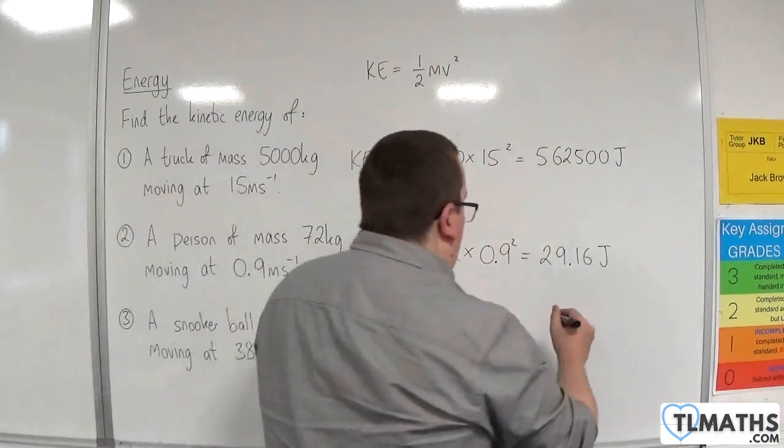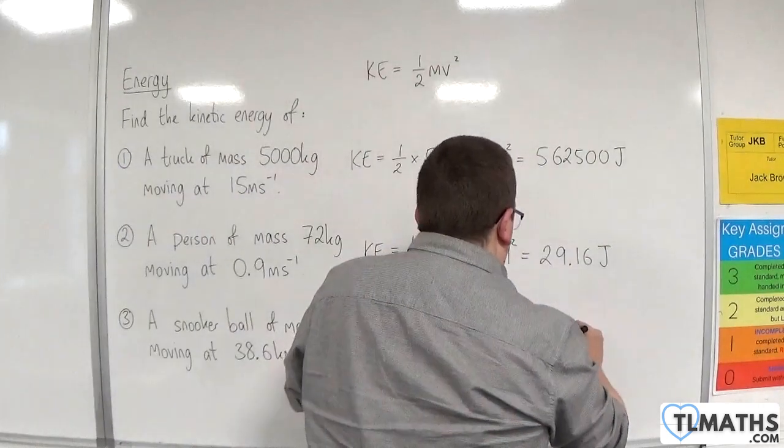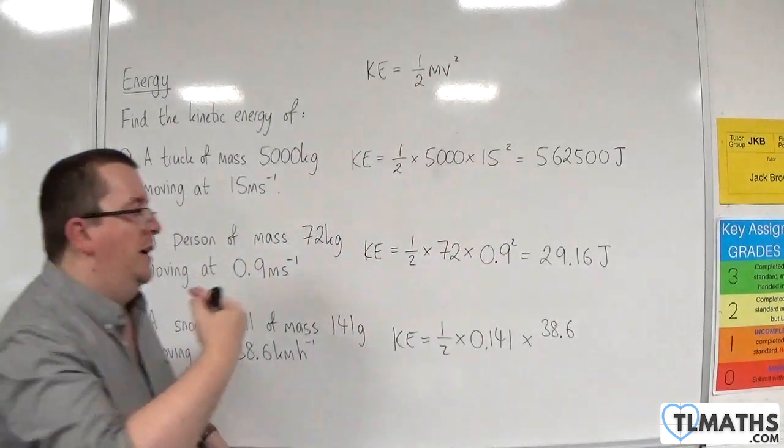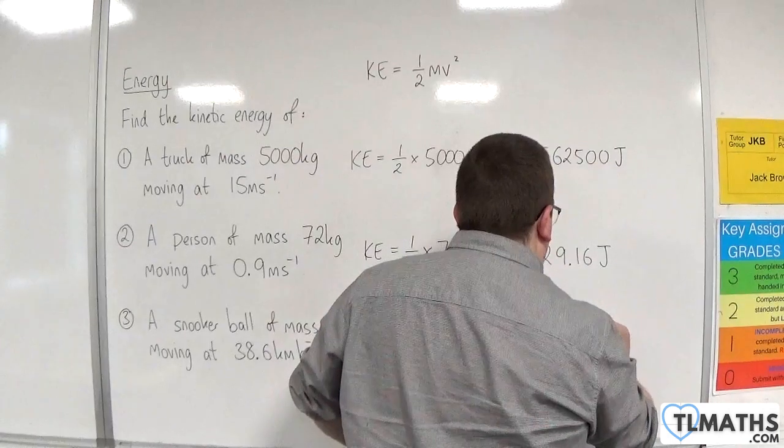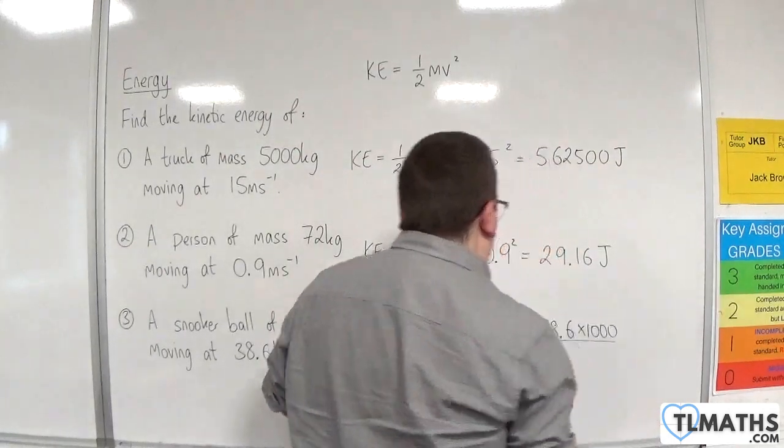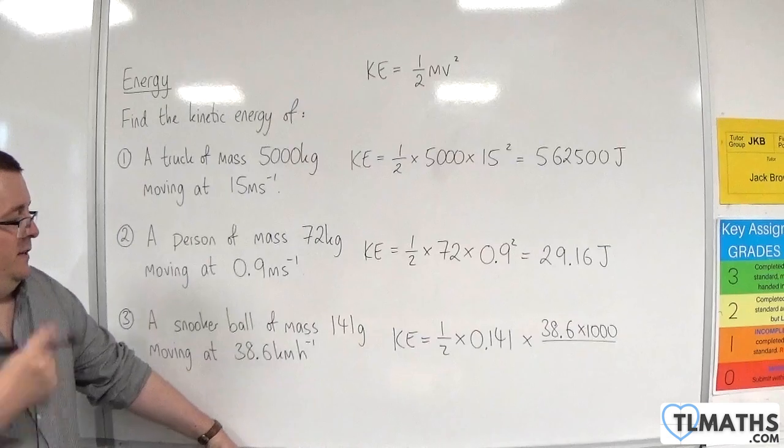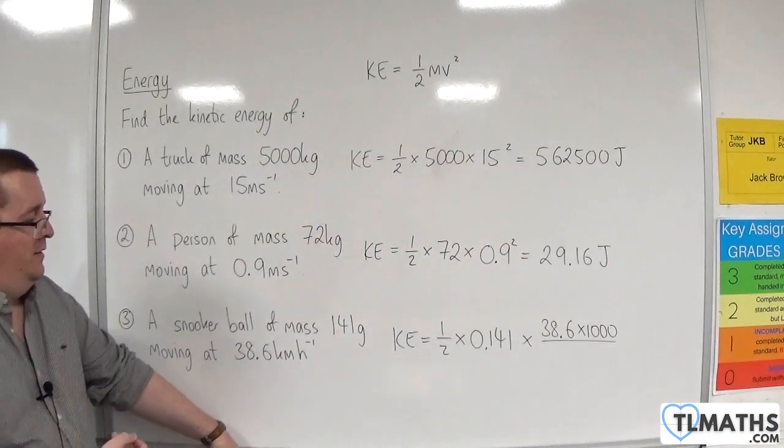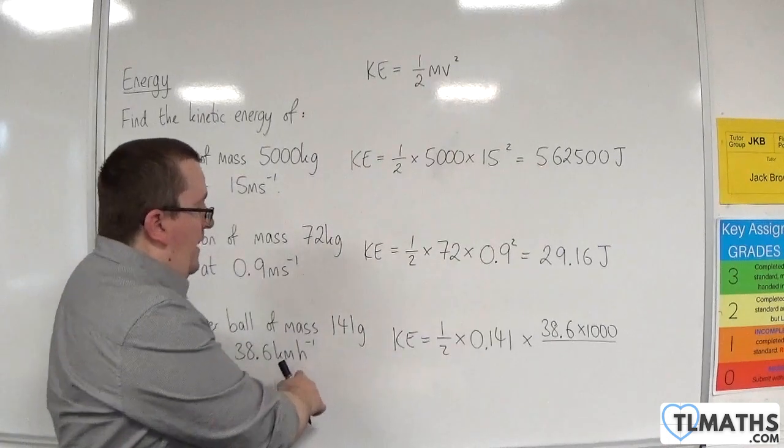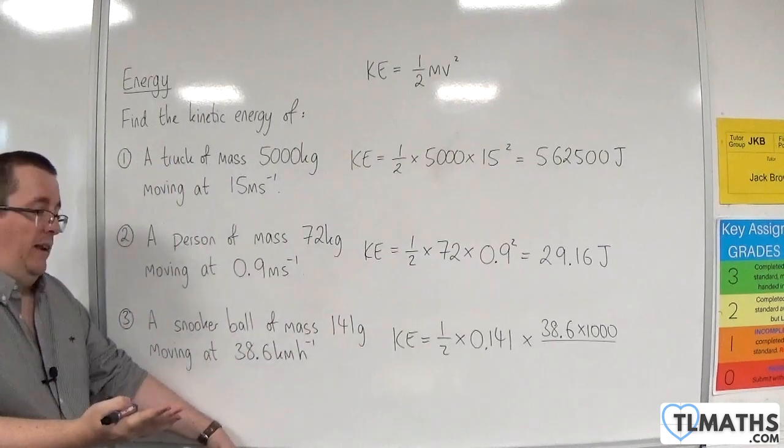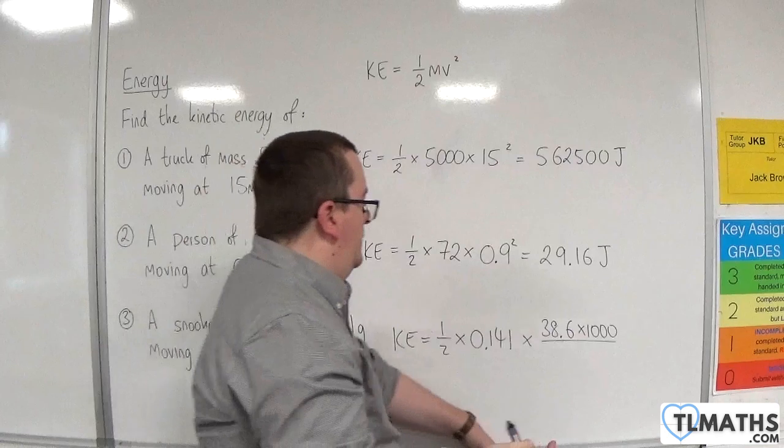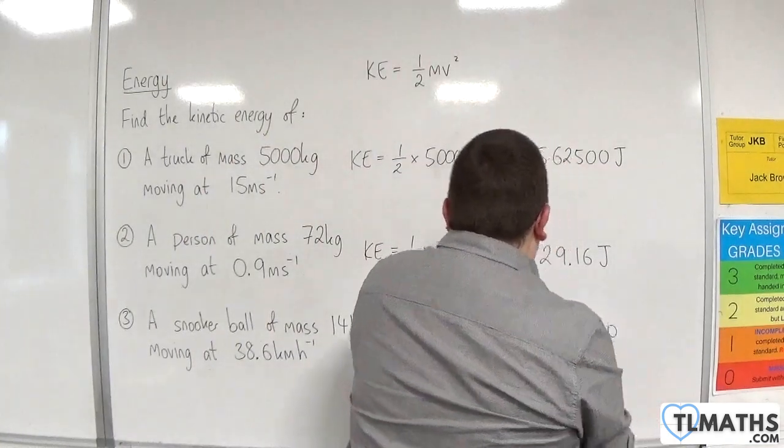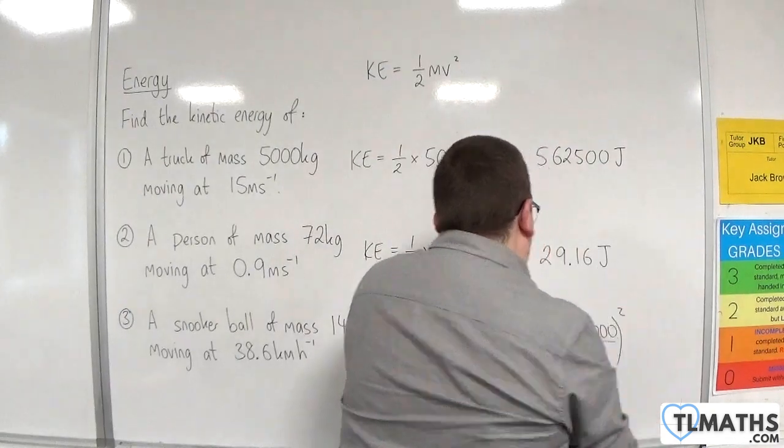Now we need this in metres per second. To convert 38.6 from kilometres per hour into metres per second, we're going to need to times by 1,000 to convert it into metres. We need to convert the per hour into per second, so there are 60 minutes in an hour, 60 seconds in a minute, so 60 times 60. And remember that is squared.